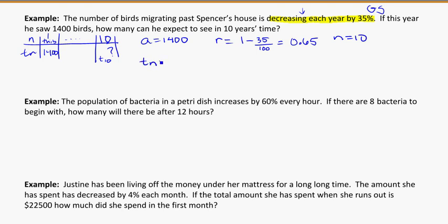So again, my formula, T sub N is equal to A times R to the power of N minus 1. Plugging in what I know, in the 10th term, the value of it should be equal to A, which is 1400, times R, which is 0.65, to the power of N, which is 10, minus 1, all in brackets. Plug it in, and you'll get 28.99.